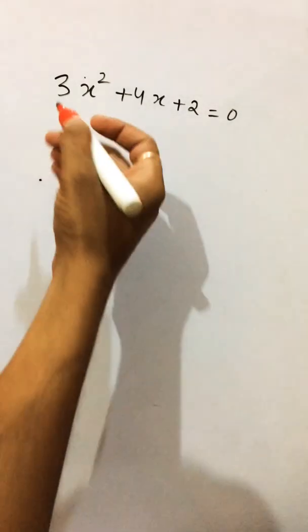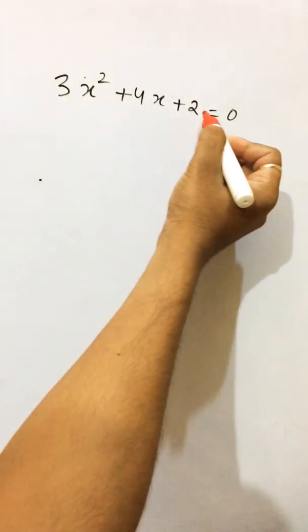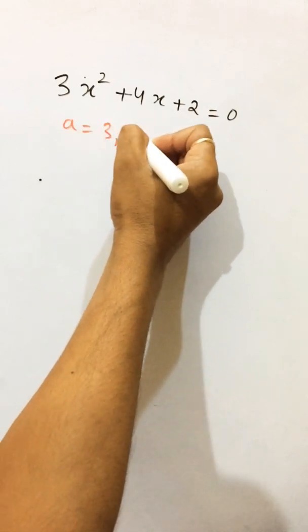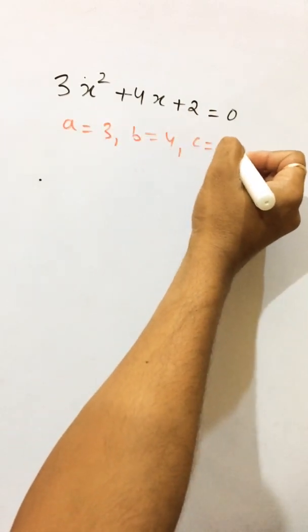Hello students, here you have a quadratic equation where ax square plus bx plus c, where a equals 3, b equals 4, and c equals 2.